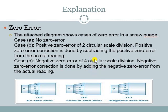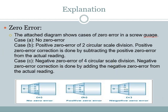The positive zero error will be corrected — you will subtract it from the final value. In the next case, part C, you will see that the zero of the circular scale is above the index line zero. In this case, the zero error is negative, and the negative zero error is also subtracted from the final value. This is the zero error of the screw gauge.